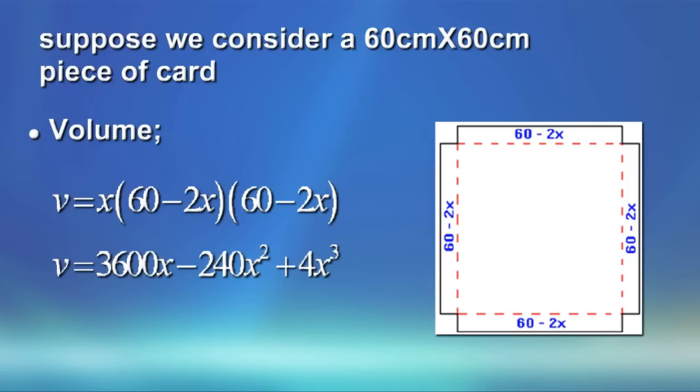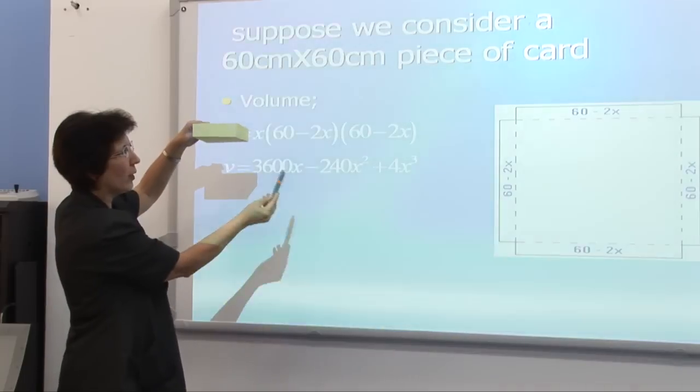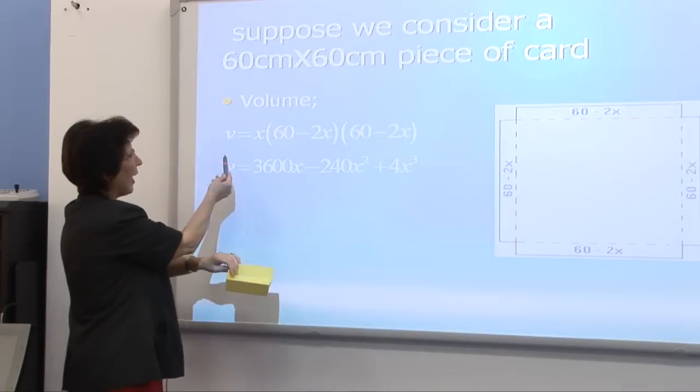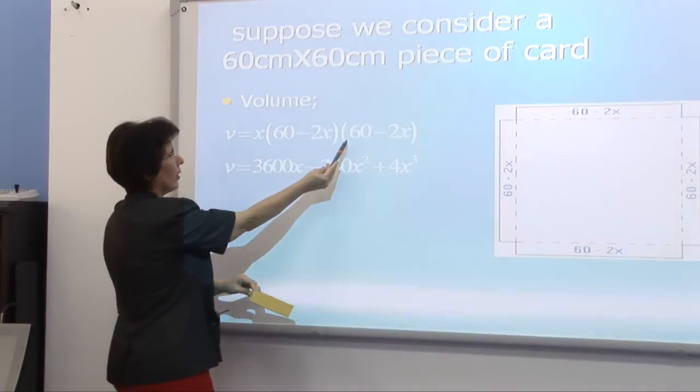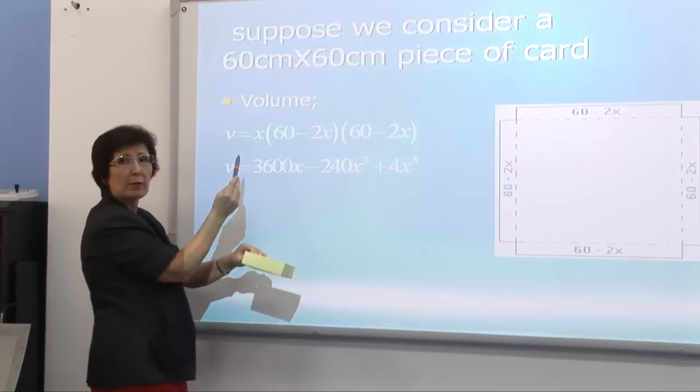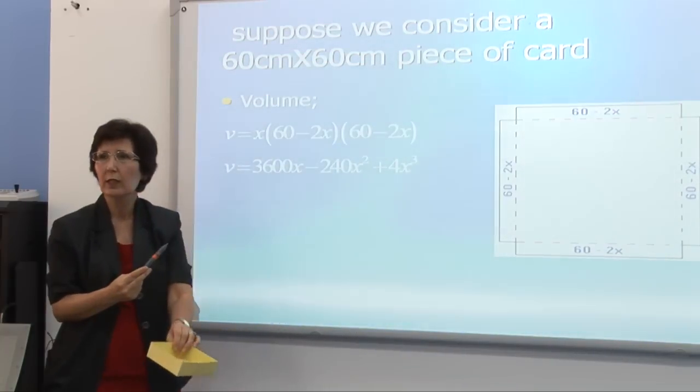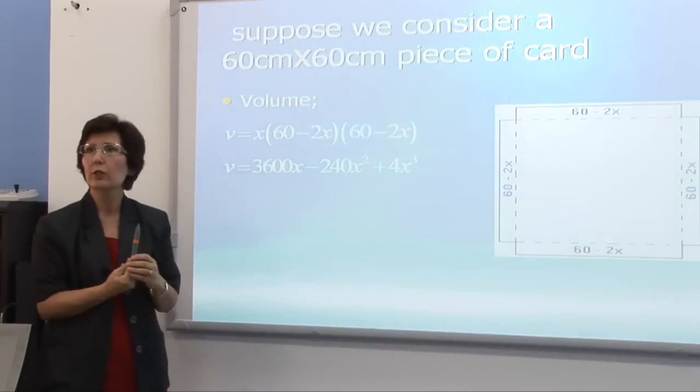And I am assuming that I am cutting off square which is x by x. So therefore, I will end up with a box which is 60 minus 2x, 60 minus 2x, as you can see here. And the height is x. And the volume can simply be found by the base area, 60 minus 2x, 60 minus 2x, times the height, which is x. And if you multiply the brackets together with x outside, you will end up with a function for the volume.